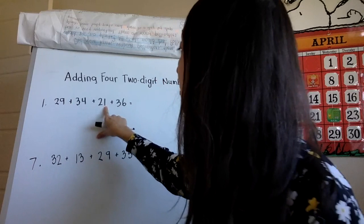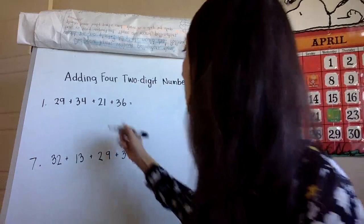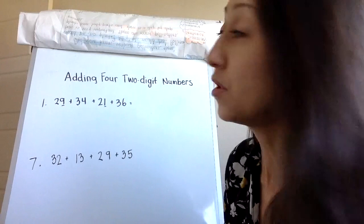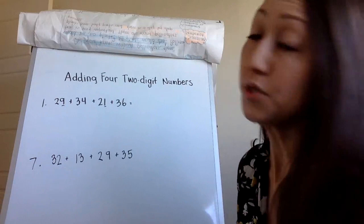You take a look at the ones place. Do you notice a number set that I can combine together that would make a ten? I see a 9 here and I see a 1 here, and I know that 9 ones plus 1 one equals 10 ones. Right there is a friendly pair, so I'm going to choose to add those two numbers together.